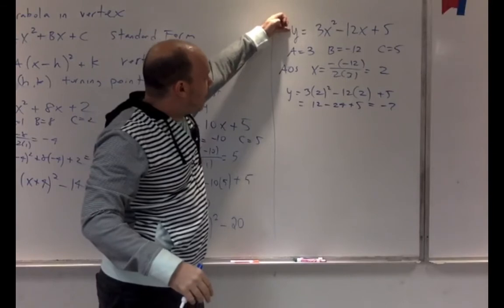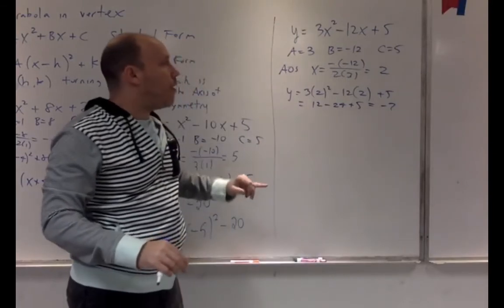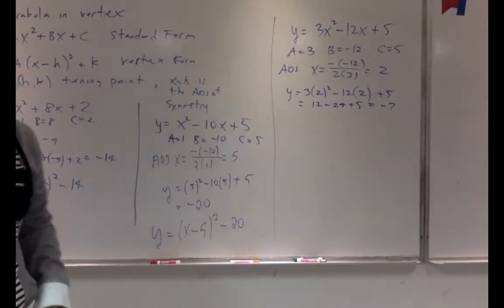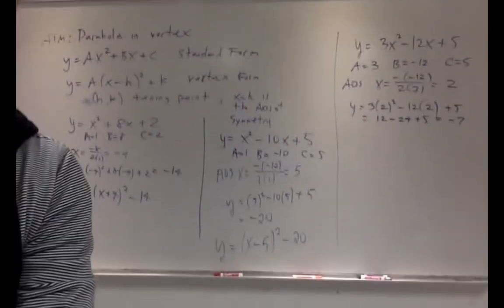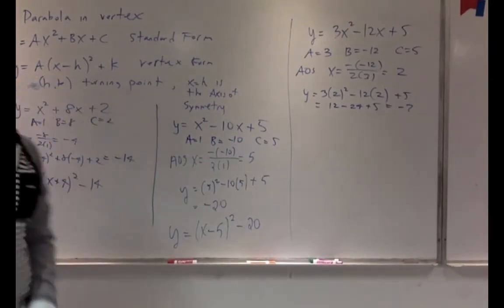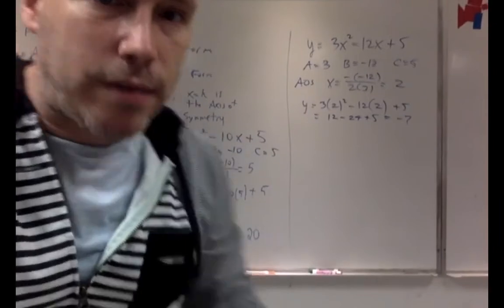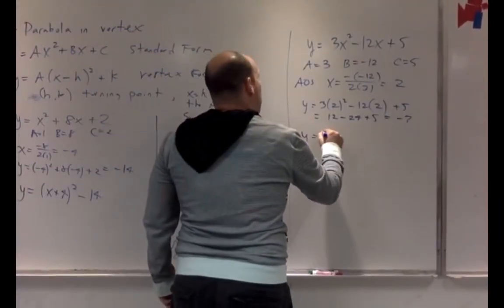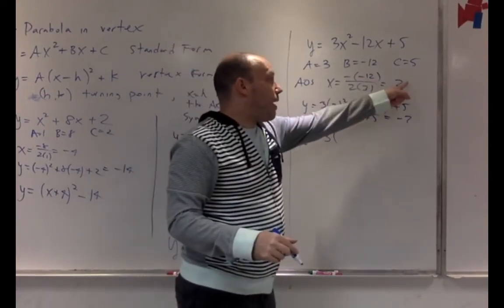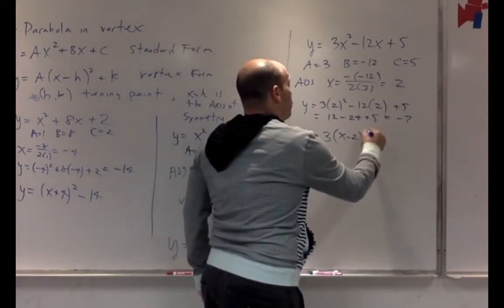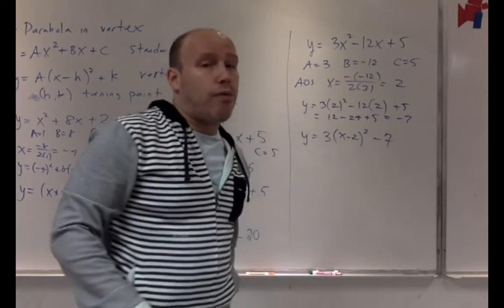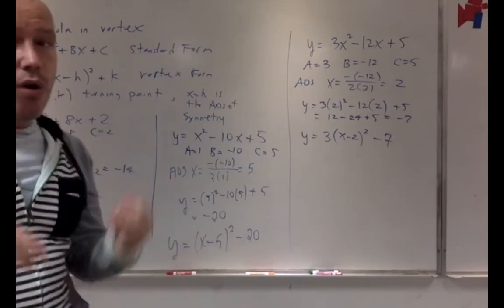Now let's write this from standard form into vertex form. Remember the A goes in front. The final answer is Y equals 3 times (X minus 2) squared minus 7. And that's how we go from standard form to vertex form, either using the GDC or doing it by hand.